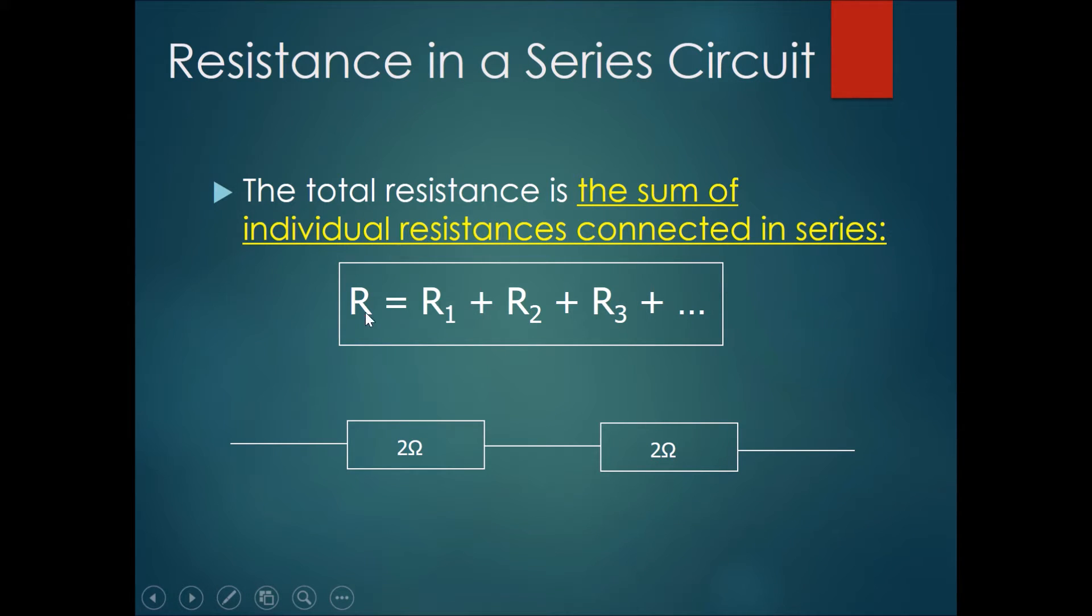Quite simply, the total resistance R equals R1 plus R2 plus R3 plus any other resistor that is along the same line that are in series.